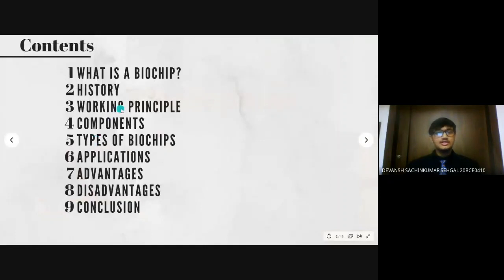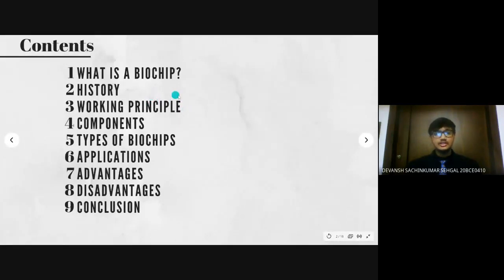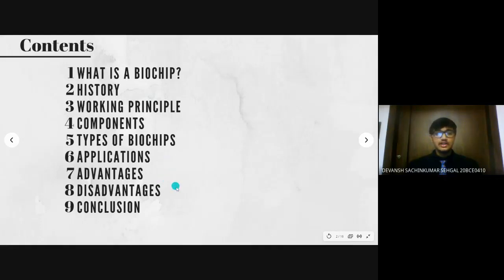This is the table of contents. As you can see, we will be discussing about the definition, some history, the working principle and components of biochips, the different types of biochips, their applications, advantages and disadvantages.